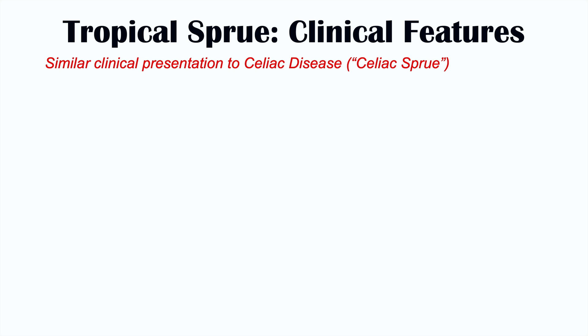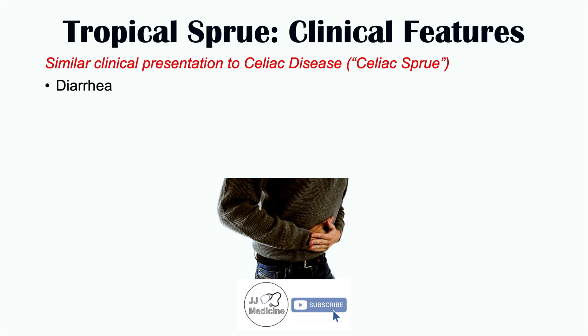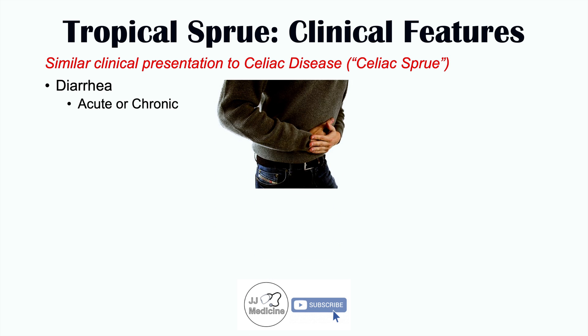Now let's talk about the clinical features of tropical sprue. It's interesting to note that tropical sprue has a similar clinical presentation to celiac disease, also known as celiac sprue. One of the most significant clinical features of tropical sprue is diarrhea. The diarrhea itself can either be acute or chronic — two weeks or less, or chronic greater than four weeks — and it is a watery and smelly diarrhea.